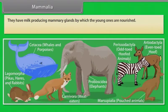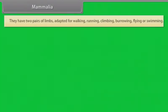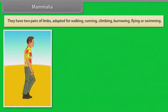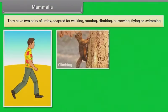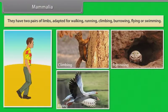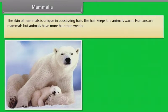Mammalia. They have milk-producing mammary glands by which the young ones are nourished. They are homeothermous — that is, warm-blooded. They have two pairs of limbs adapted for walking, running, climbing, burrowing, flying or swimming. The skin of mammals is unique in possessing hair, which helps keep the animals warm.